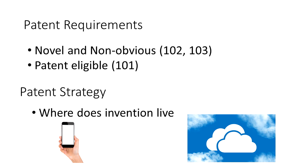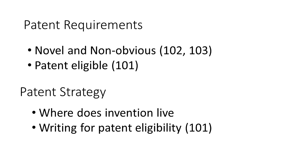Remember, a U.S. patent is only enforceable in the United States. We want to write our application such that it will be patent eligible. Note that 101 rejections are sometimes called Alice rejections, named after the court case that made it easier for the patent office to issue these rejections.